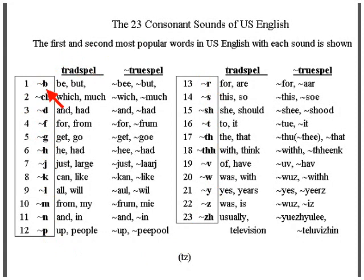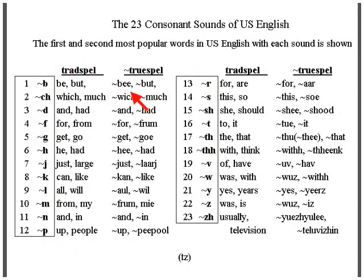The B sound is written with the letter B. 'B' and 'but' are the first and second most popular words in English with this sound — B is first, but is second. Next is the CH sound, as in 'which' and 'much.'